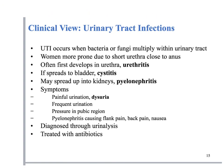Voluntary control of urination can develop anywhere between about one and a half to three years old. Most children don't have complete nighttime control until they're five, six, or seven years old, depending on their size.